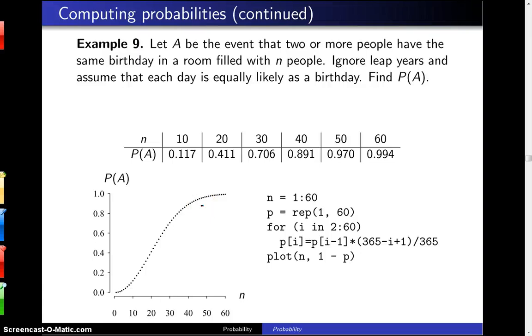Let A be the event that two or more people have the same birthday in a room filled with N people. Ignore leap years and assume that each day is equally likely as a birthday. Find the probability of A.